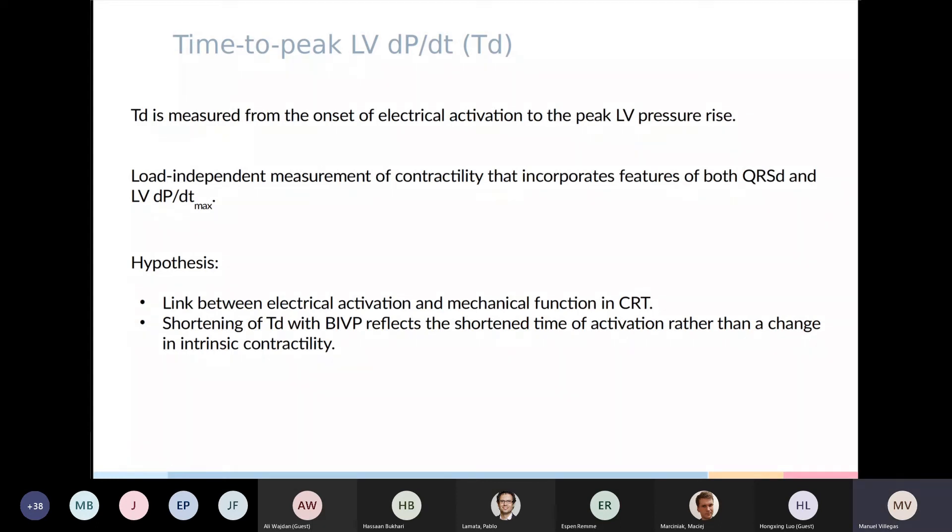In order to tackle this, the first study that we've done is analyzing the index time to peak LV dP/dt, or TD, in search of a preload independent index. This measures the time from onset of electrical activation to the peak of left ventricular pressure rise. It was previously described briefly as a load-independent measurement of contractility that incorporates features of both QRS duration and dP/dt max. But we saw potential in it and argued that it could be the link between electrical activation and mechanical function in CRT, and that shortening of this value when pacing will reflect the shortening time of activation rather than a change in contractility.